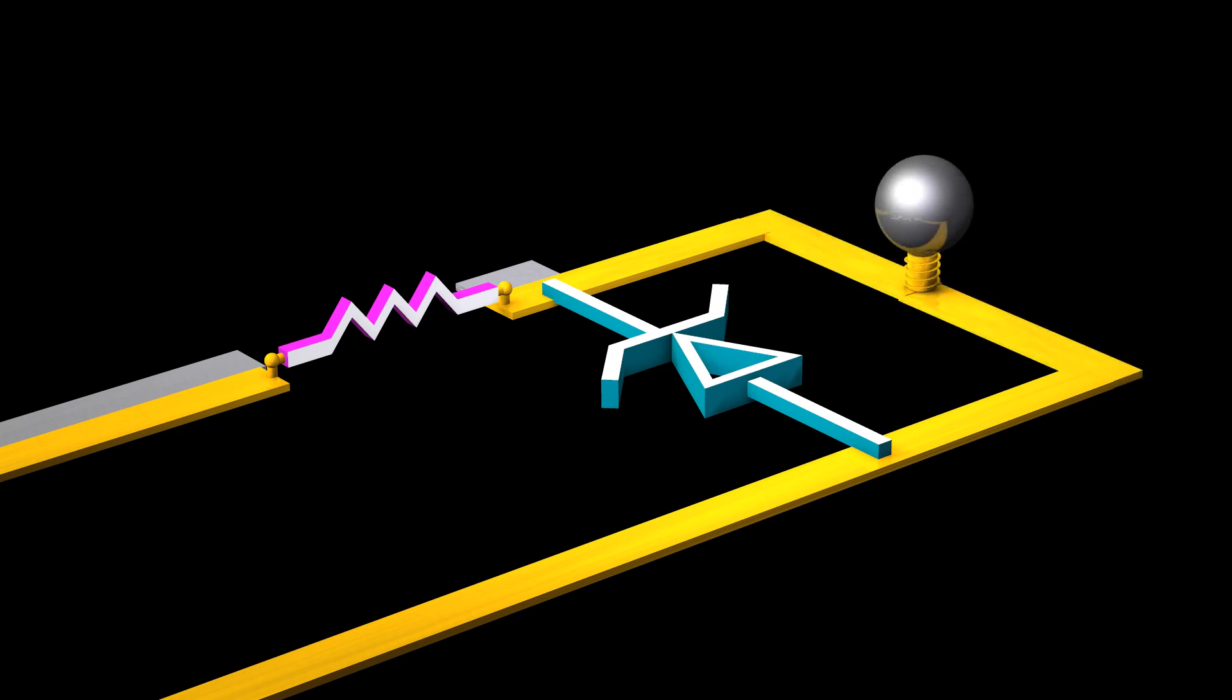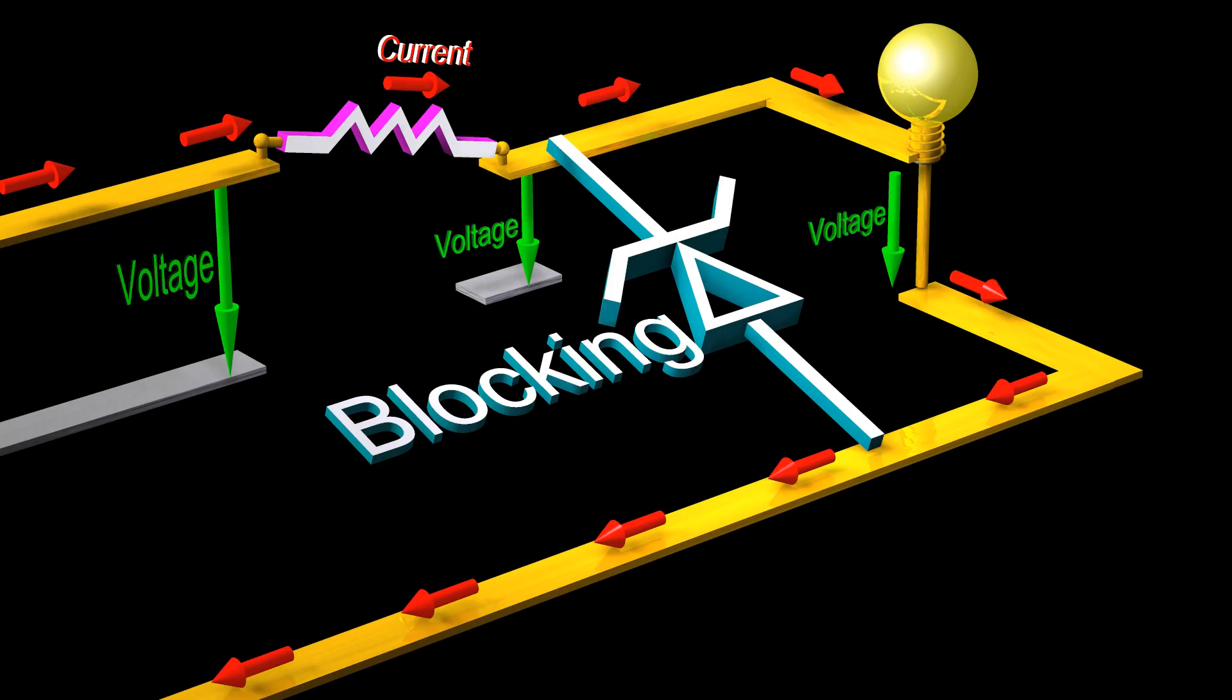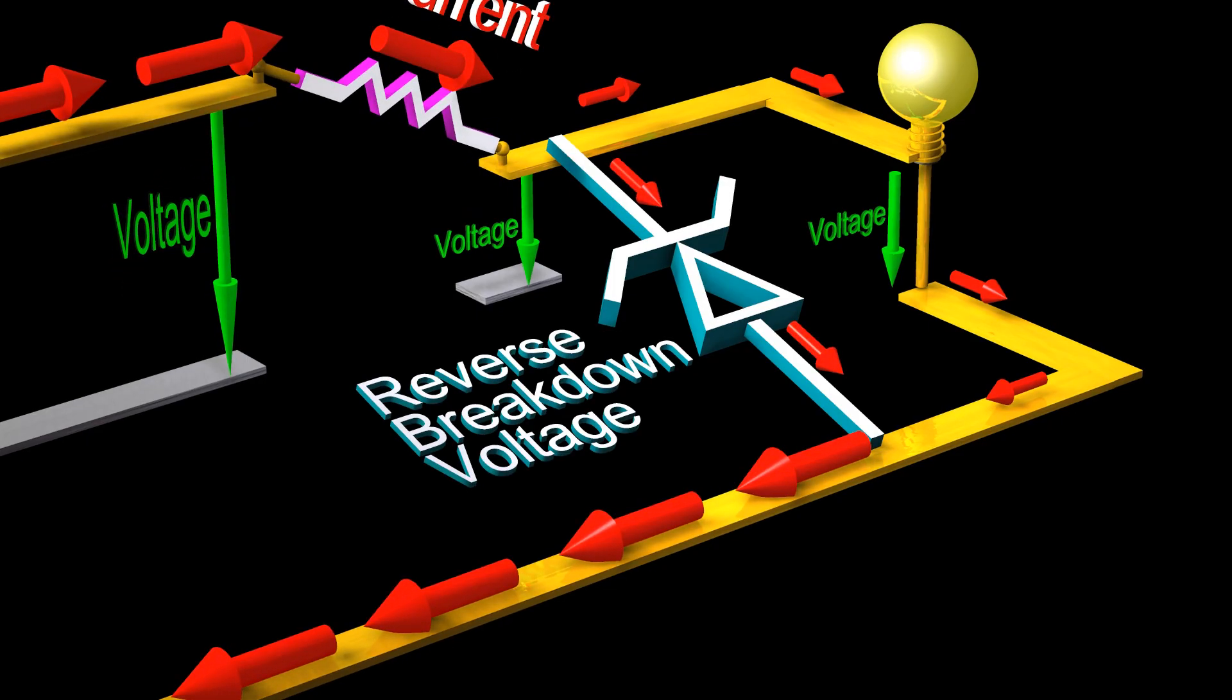Let us now add a light bulb in parallel with the Zener diode. The Zener diode prevents the voltage across the light bulb from going higher than the Zener's breakdown voltage.